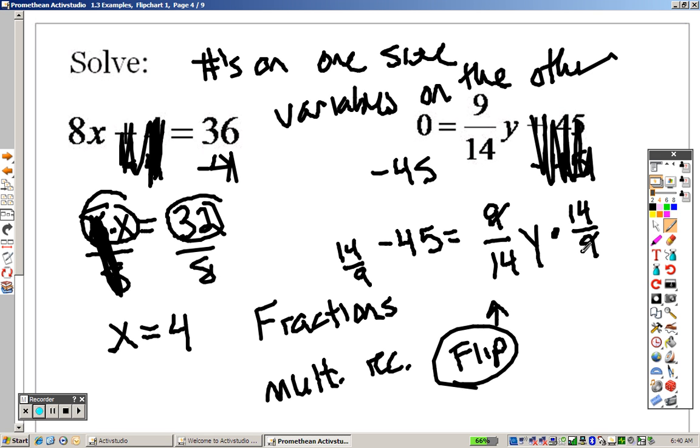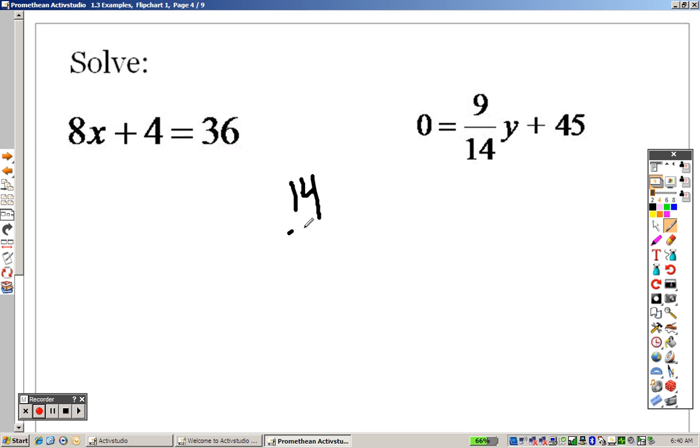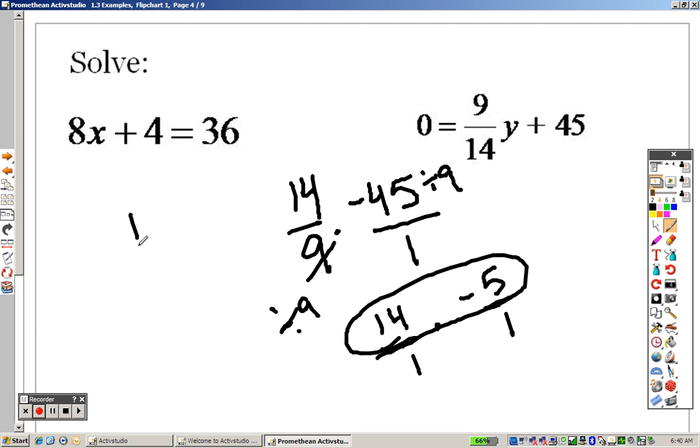So when I do that, the 9s cross out. The 14s cross out, which means all I have left is y, which is great. But I have 14 over 9 times negative 45. Alright, so that's what we have. I have 14 over 9 times negative 45. Well, here's how you solve it. I write it as over 1. I can divide this by 9. I can divide that by 9, and I can divide that by 9. Meaning, now I have 14 over 1, and I have negative 5 over 1. So really, I just need to multiply those two together. 14 times 5 is 20. We got a 20. 4 times 5 is 20. Bring that up to the top. 5 times 1 is 5. 5 plus 2 is 7. And because one of them was negative, it's negative. So your answer is negative 70.